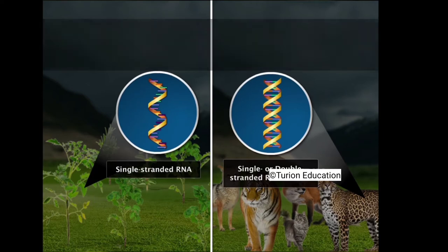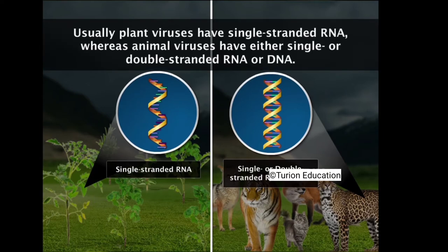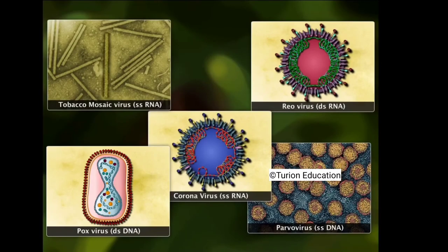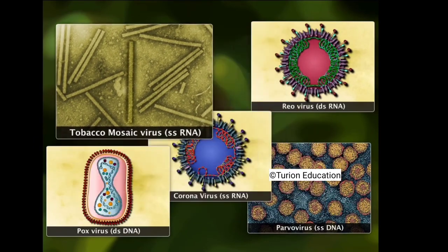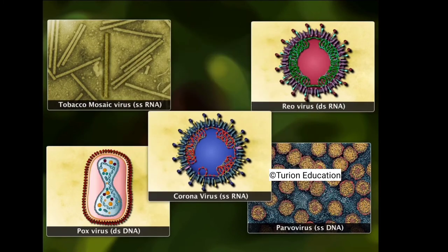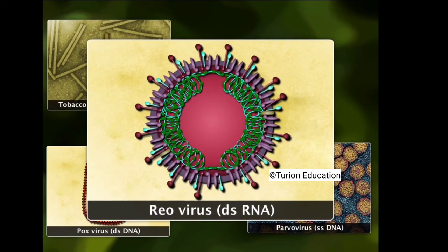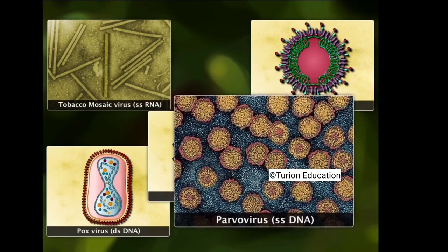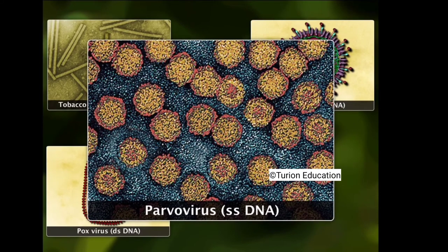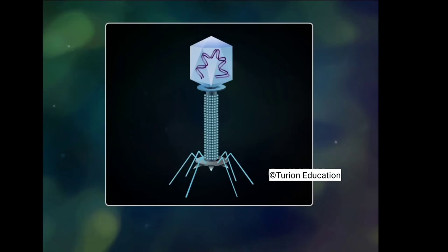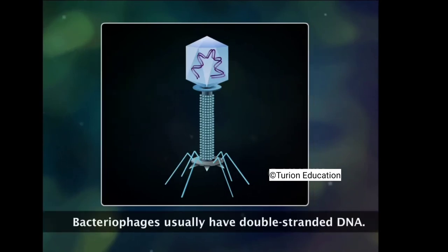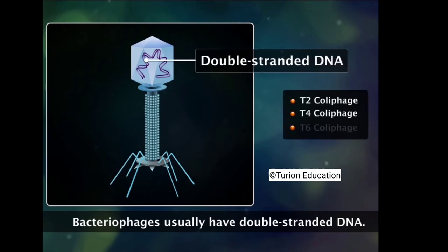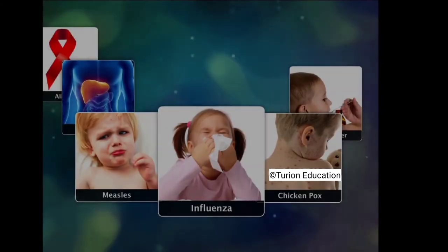Viruses that infect plants generally have single-stranded RNA, whereas viruses that infect animals have either single- or double-stranded RNA or DNA. Tobacco mosaic virus has single-stranded RNA. Animal viruses such as coronavirus have single-stranded RNA and reovirus has double-stranded RNA. Poxvirus has double-stranded DNA and parvovirus has single-stranded DNA. Bacteriophages, which infect bacteria, usually have double-stranded DNA; T2, T4, and T6 coliphages possess double-stranded DNA.